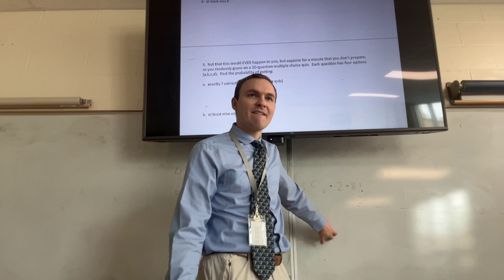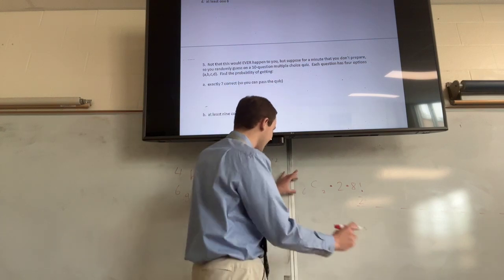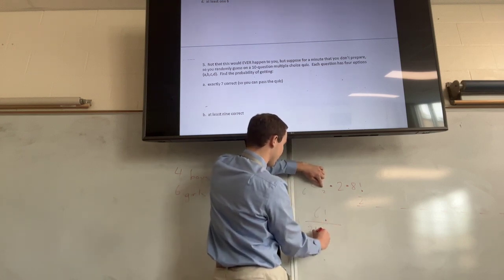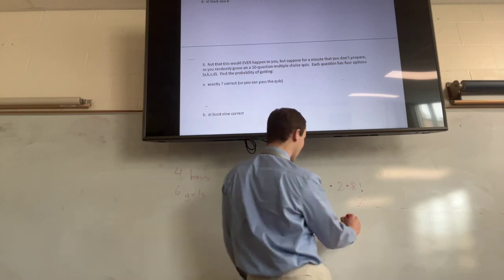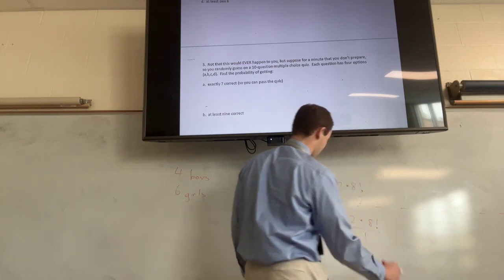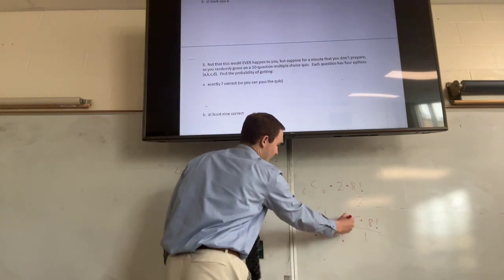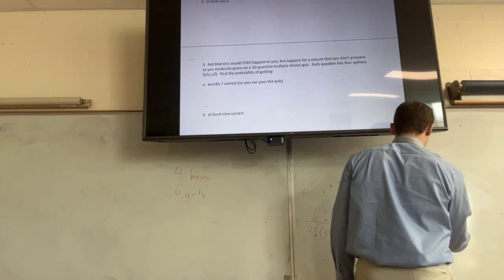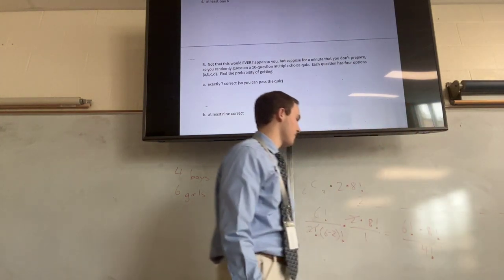And then with my remaining eight students, how many ways are there to order them in the remaining spots? Eight factorial. So six choose two, do you guys remember the formula for that? I can do calculator, but do you remember the do-it-by-hand formula?